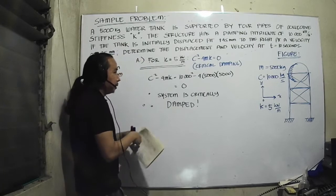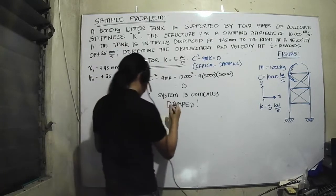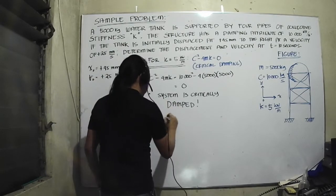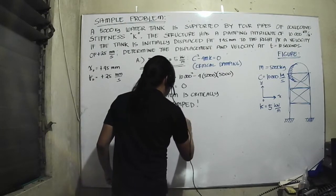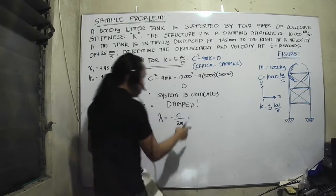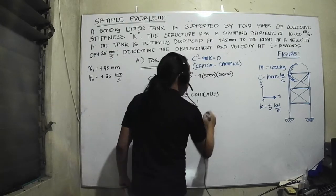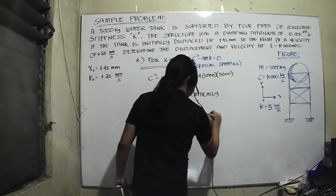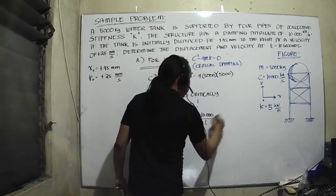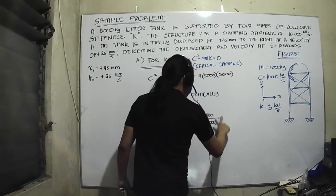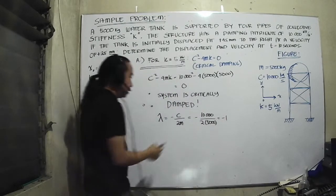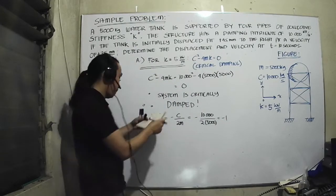When you say critical damping, our quantity root is equal to negative c over 2m. Negative c is equal to 10,000 and m is equal to 5,000, and it's not surprising that this is equal to negative 1.